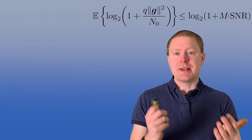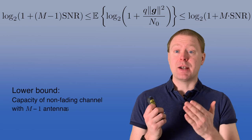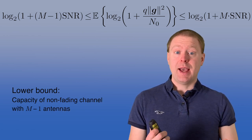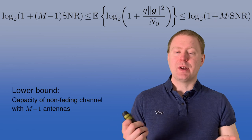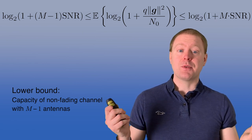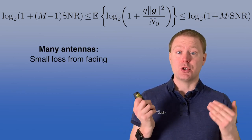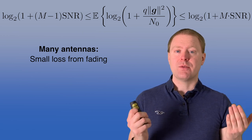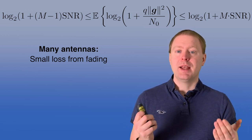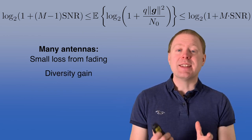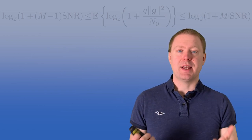With IID Rayleigh fading, the lower bound is log₂ of 1 plus (M − 1) times SNR. When M is large, M − 1 and M are roughly the same thing, and therefore there is a small gap between the upper and lower bound, showing that we lose very little from having a fading channel. This is due to the diversity gain — we get a lot of diversity when we have many antennas.